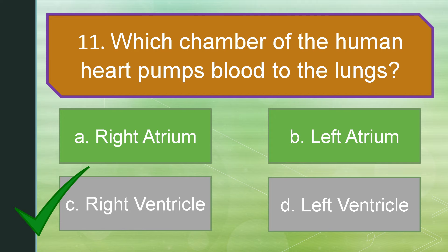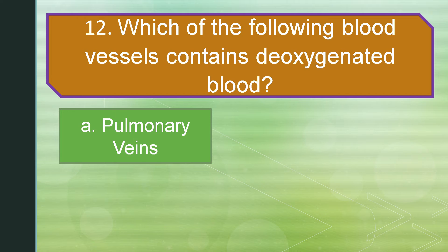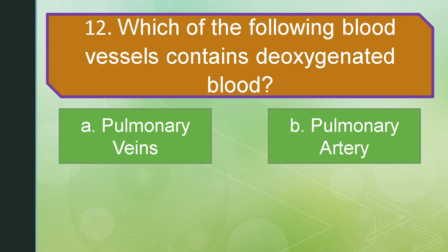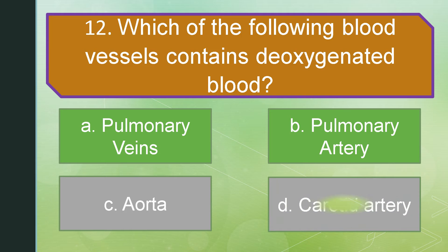Question number 12. Which of the following blood vessels contains deoxygenated blood? Letter A: Pulmonary veins. Letter B: Pulmonary artery. Letter C: Aorta. Or letter D: Carotid artery. The correct answer is letter B: Pulmonary artery.